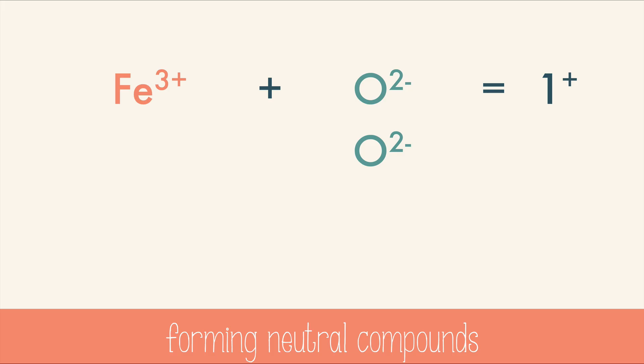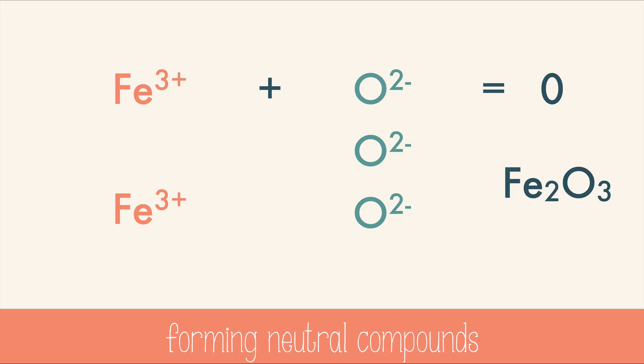Just add another oxygen. Now our total is minus one, so we're going to have to add another iron three, and the total is plus two. And finally, one more oxygen with a two minus charge brings us to a neutral zero charge. We have six positive charges and six negative charges, so the formula for this is Fe₂O₃, because we need two iron atoms and three oxygen atoms to form the neutral compound.